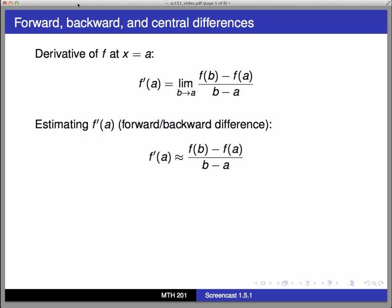To estimate f'(a), where a is some point for which the data is known, let (a, f(a)) be the known data point where you want the derivative, and then choose (b, f(b)) to be some point ahead of a in the table. For the backward difference, use (b, f(b)) where b is a point behind a in the table.